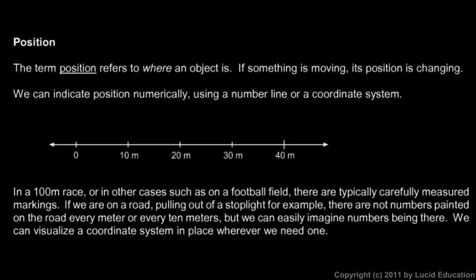And pulling out of a stoplight in a car, there's not markings on the road. But in cases where there aren't markings, where there isn't an actual number line there, you can imagine one being there. So when a car pulls out of a stoplight, you could imagine the zero point being right at the beginning, and you could imagine numbers along the road, and you could indicate the car's position at any time simply by naming that number.